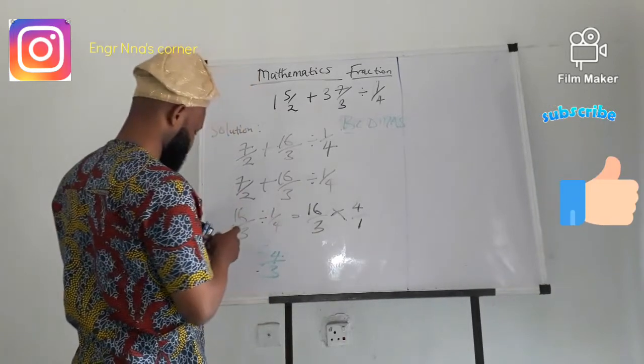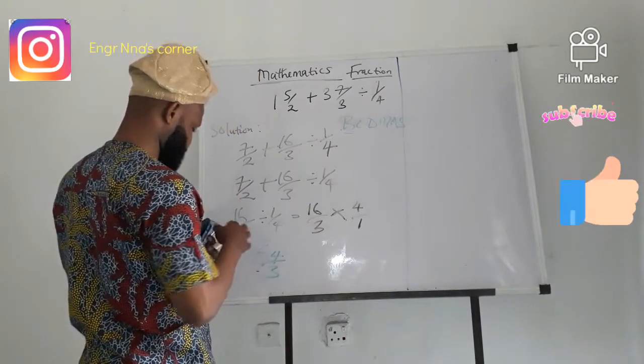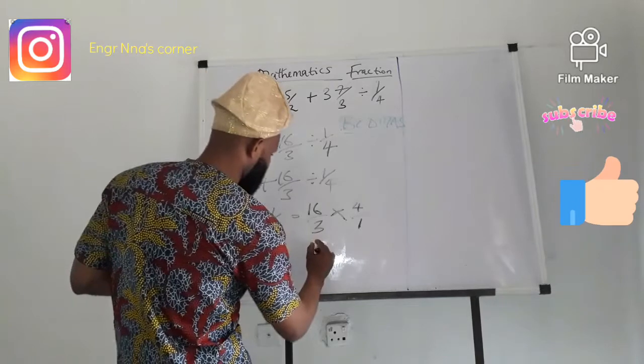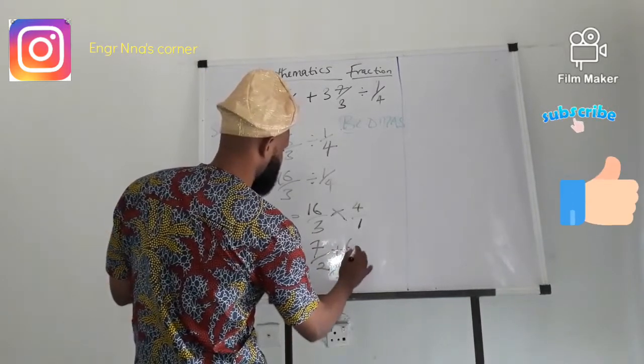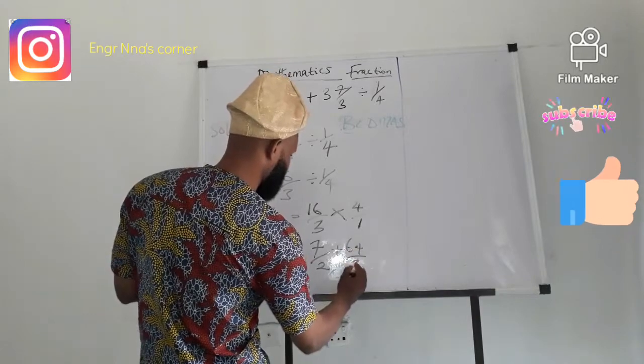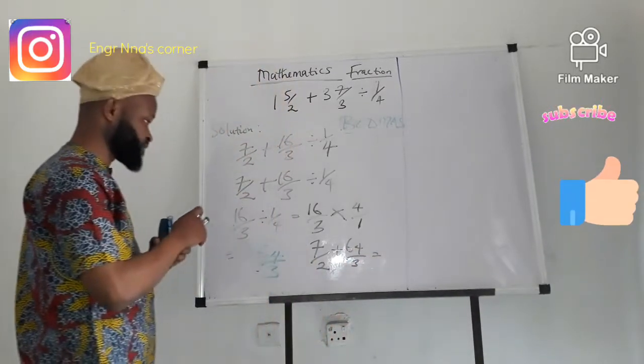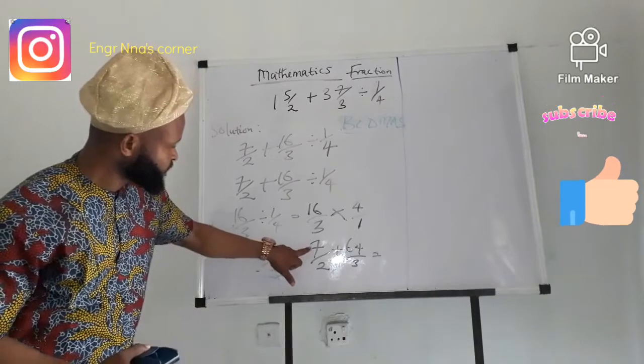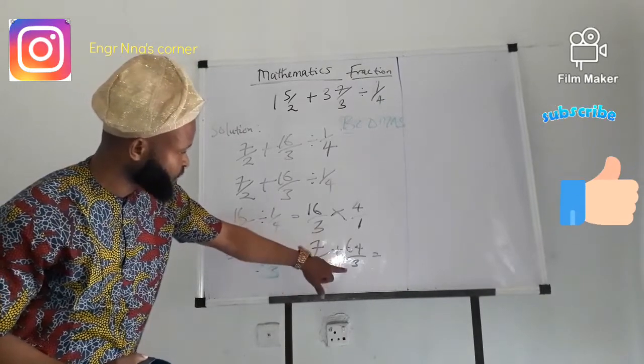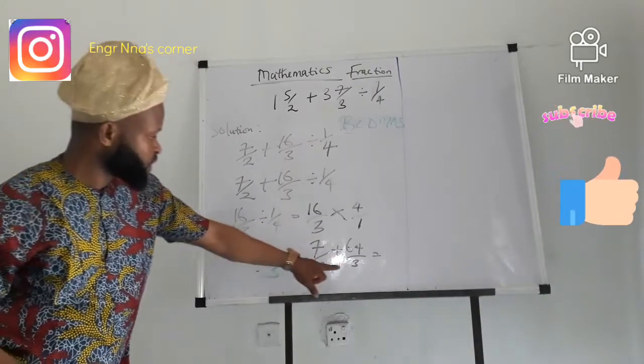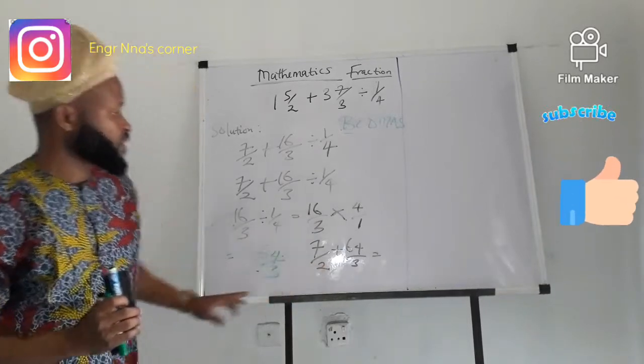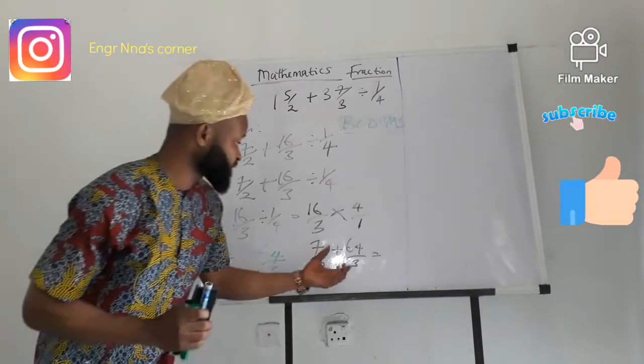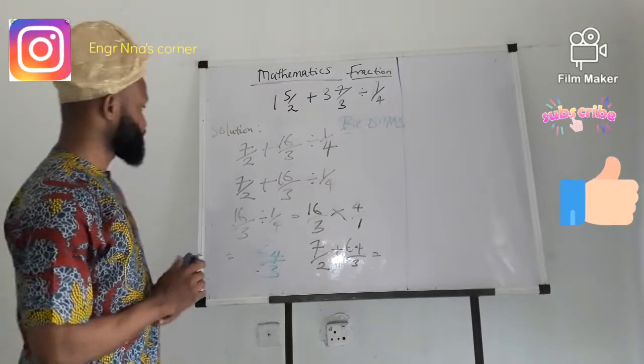So we say 7 over 2 plus 64 over 3. What will it give us? We have 7 over 2 plus 64 over 3. We have here 2 and 3, and 2 and 3 have the LCM of 6.